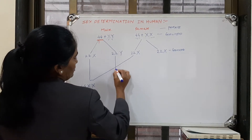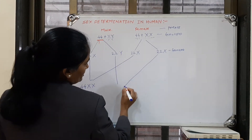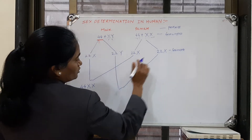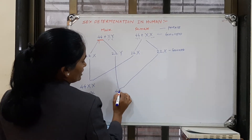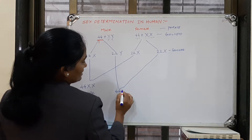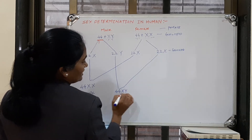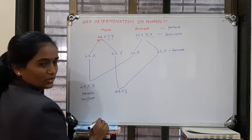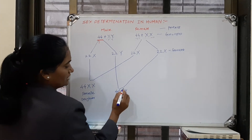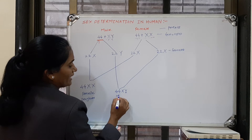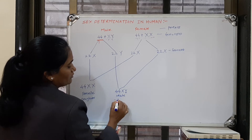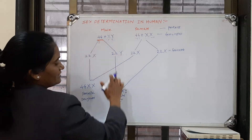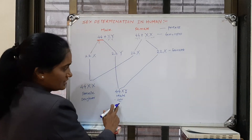In the next fertilization: 22 plus 22 becomes 44 autosomes, and X comes from the female and Y from the male. This XY genotype corresponds to a male. The offspring is a son.